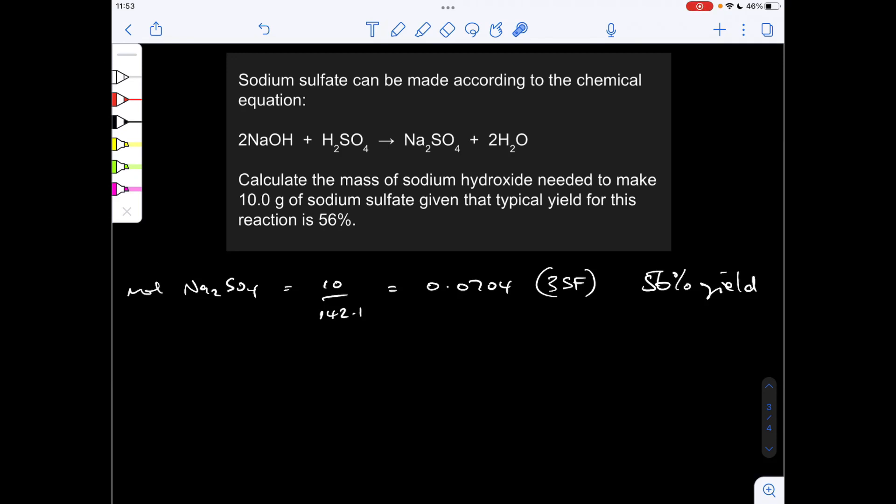Now the thing to stress here is that is from this 56% yield. So the next thing I'm doing is working out, well, how many moles of sodium hydroxide would I need? So it's obviously two times the moles of sodium sulphate, three significant figures, 0.141, but remember the full numbers in my calculator, we're still at that 56% yield.